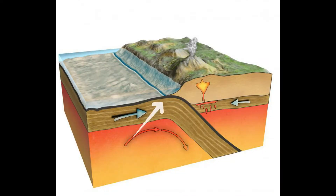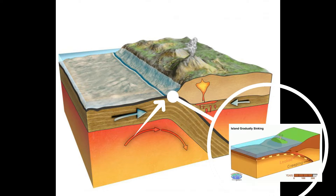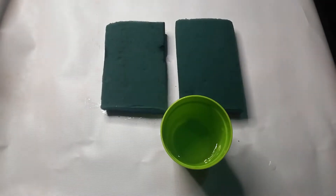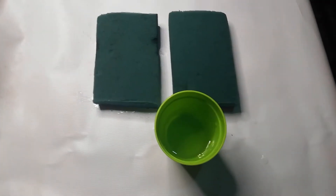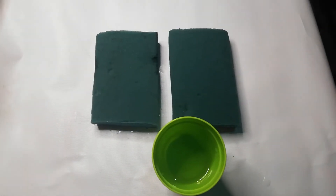To understand the processes that occur along a convergent boundary between an oceanic and continental crust, let's try this experiment. We will need half a cup of water, two pieces of foam, and a flat surface.